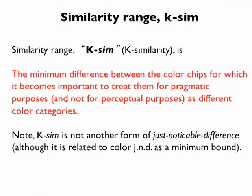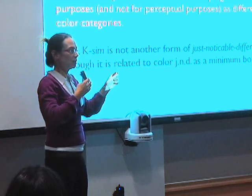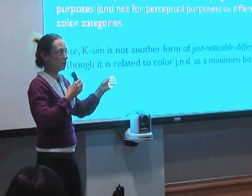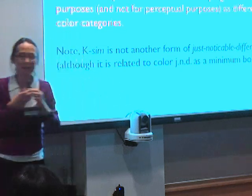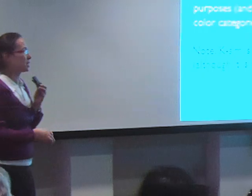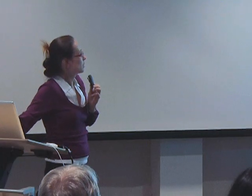There is only one parameter in this model: k-similarity. This parameter tells me which color chips are considered close and which are considered far for my purposes. K-similarity is the minimum difference between color chips for which it becomes important to treat them pragmatically as different color categories. It's different from the just-noticeable difference — it doesn't mean you can't distinguish them, but you choose to call them the same name because it's pragmatically useful.